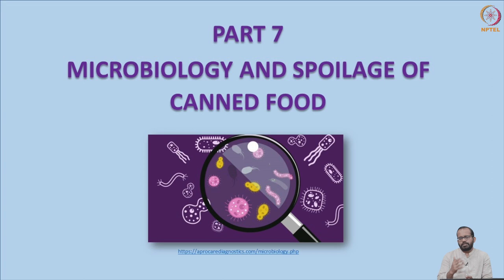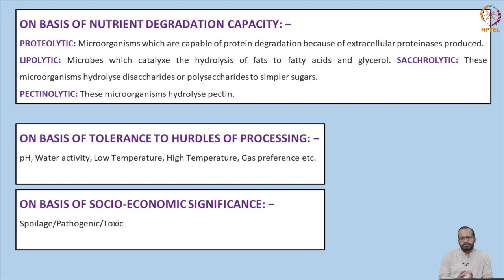Microorganisms are the primary reason for food getting spoiled. Canned food products are also prone to spoilage when microorganisms come into contact with the enclosed food. If we want to control any particular group of organisms, we need to understand their basic nature, classification, characteristics, physiology, anatomy, and the conditions which promote or limit their growth.